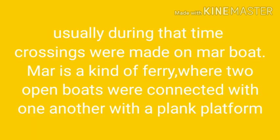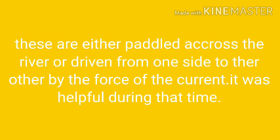Usually during that time, crossings were made in a marbat. A marbat is a kind of ferry where two open boats are connected to one another with a plank platform. These are either paddled across the river or driven from one side to the other by the force of the current. It was very helpful during that time.